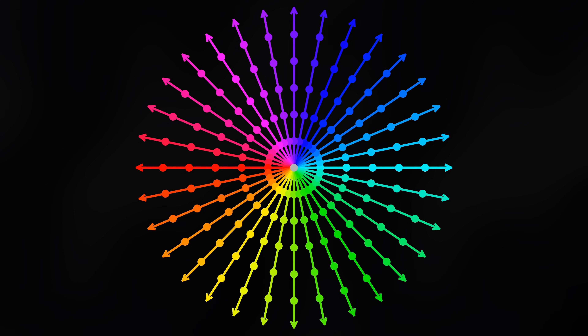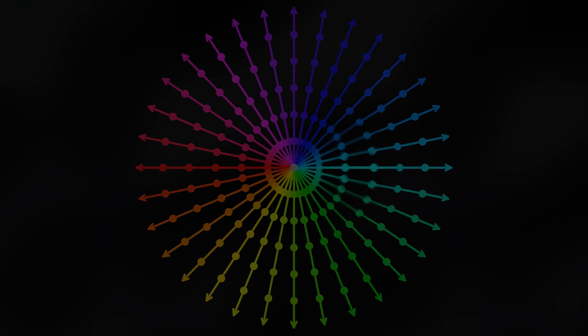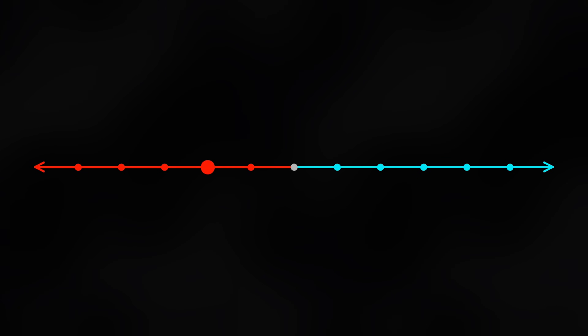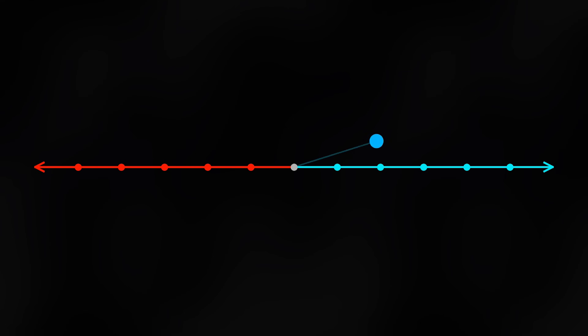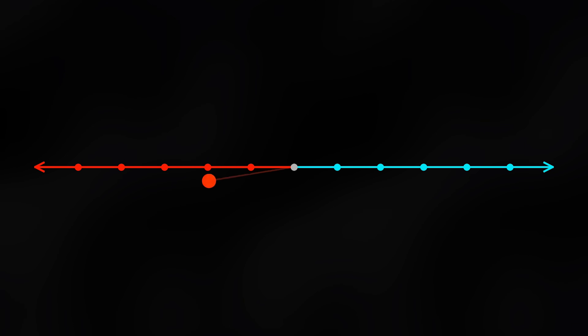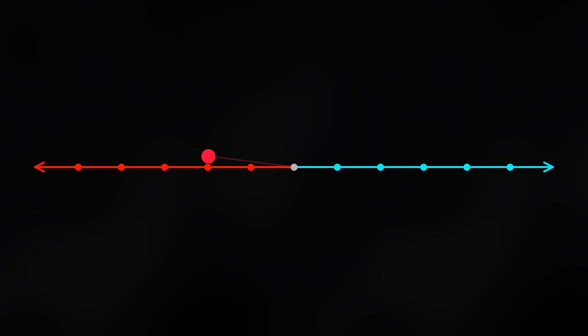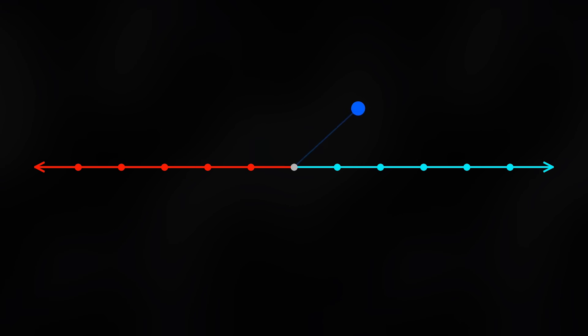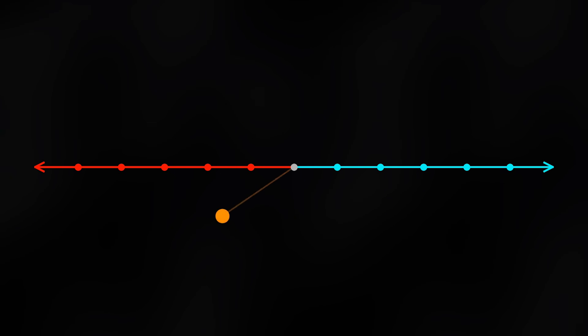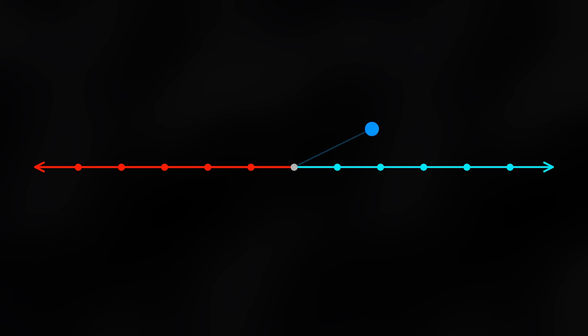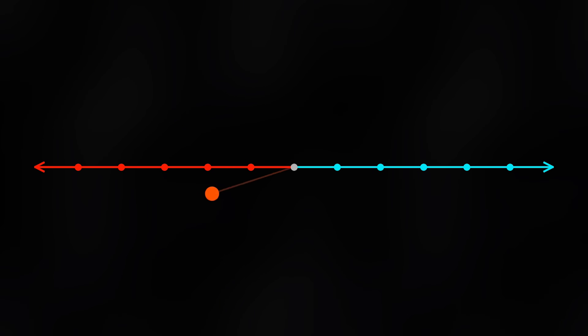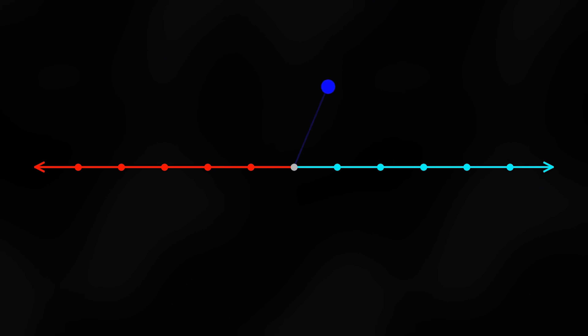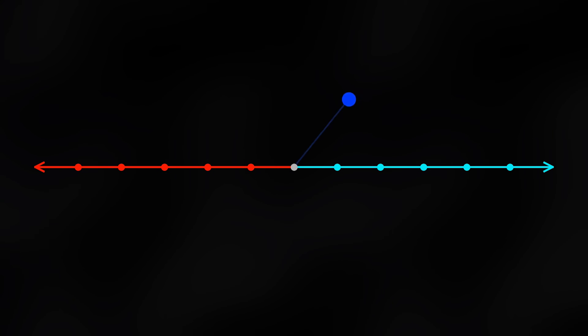If you're used to using numbers to count things, this seems like an affront to reason. Consider the number two: you could have positive two or negative two, but with complex numbers you could also have a two that's somewhere in the circle of radius two. A number with magnitude two in the complex plane can be at any of those points — even pointing straight up, which is neither positive nor negative, yet still has amplitude two.